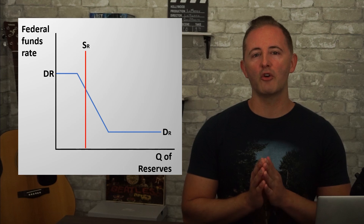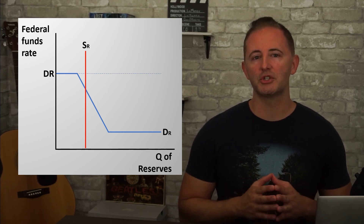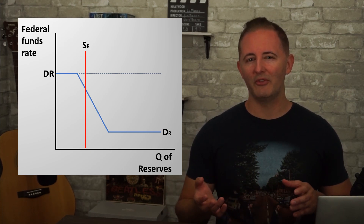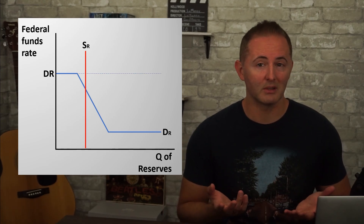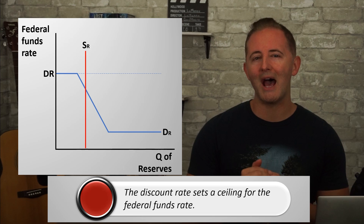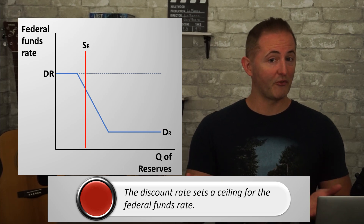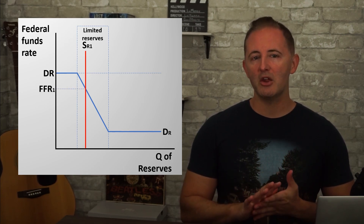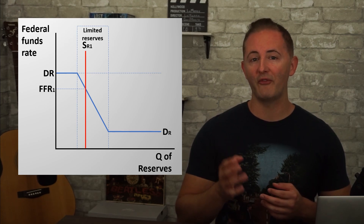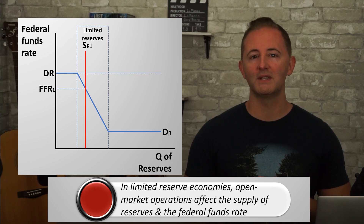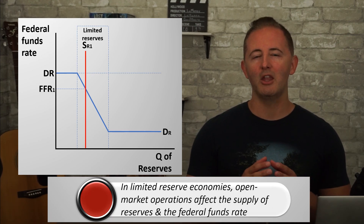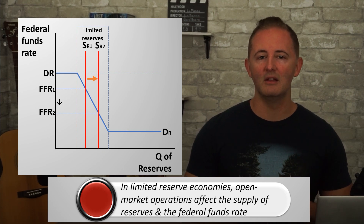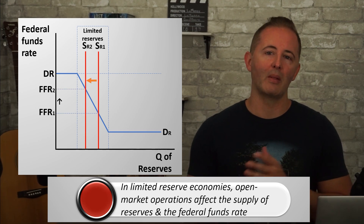The first section is the discount rate. The demand curve never goes above the discount rate because this is the interest rate the Fed will lend to banks at — so why would any bank ever pay a higher interest rate to another bank? If the discount rate is 4%, a bank wouldn't pay 6%. So the discount rate effectively sets a ceiling for how high the federal funds rate can be. Next is the downward sloping section, which represents economies with limited reserves. An open market purchase increases the supply of reserves, shifting the curve to the right and decreasing the federal funds rate as the Fed intended. An open market sale shifts the supply curve to the left, raising the federal funds rate.